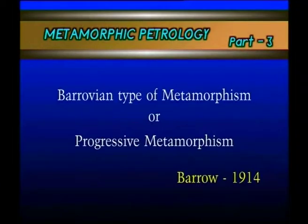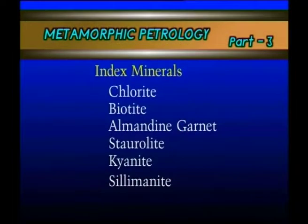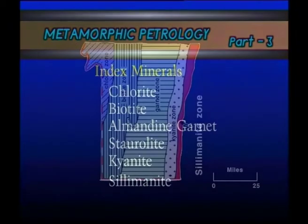Barrov, while mapping the Dalradian schists of the Scottish Highlands, was the first person to map that area and find out the zones of metamorphism on the basis of index minerals. The presence of one index mineral like chlorite and the disappearance of another index mineral can give rise to different zones.